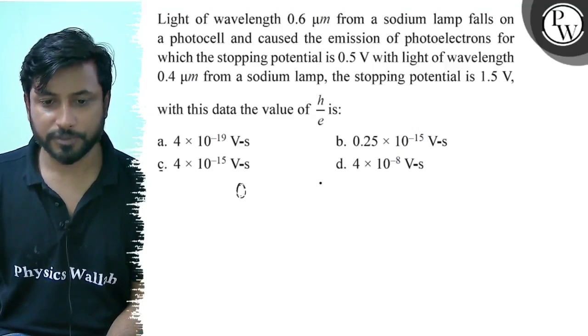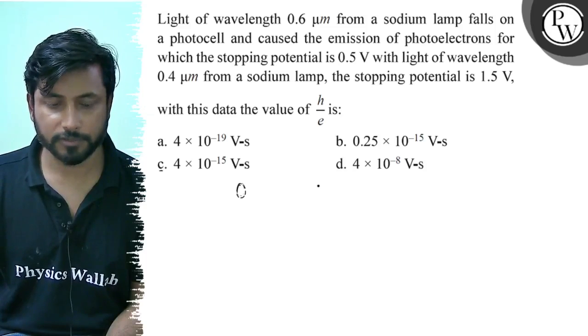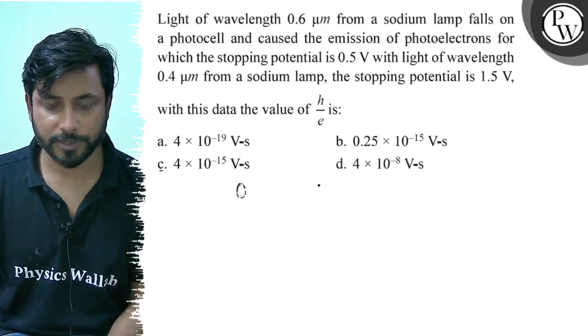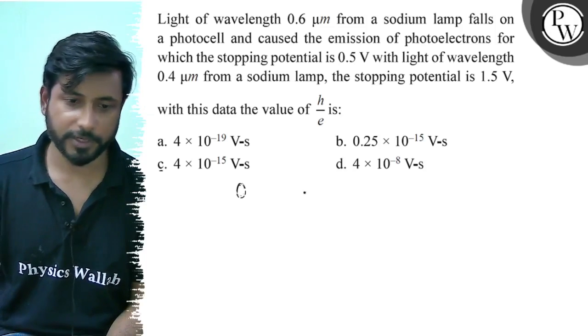Light of wavelength 0.6 micrometer from a sodium lamp falls on a photocell and causes the emission of photoelectrons for which the stopping potential is 0.5 volt. With light of wavelength 0.4 micrometer from a sodium lamp, the stopping potential is 1.5 volt. With this data, the value of h by e is: